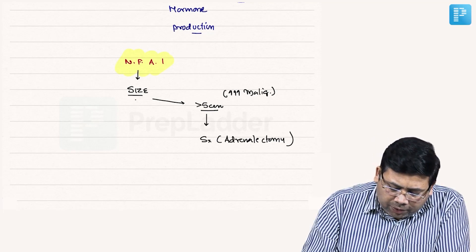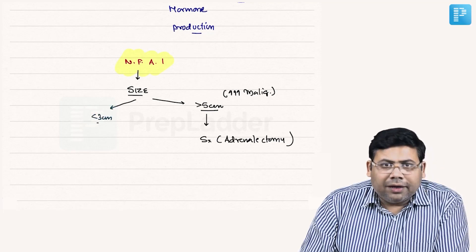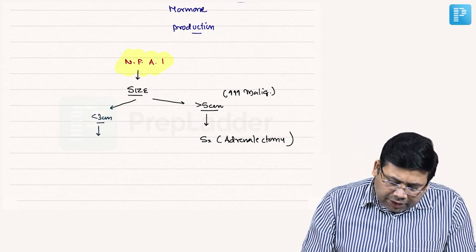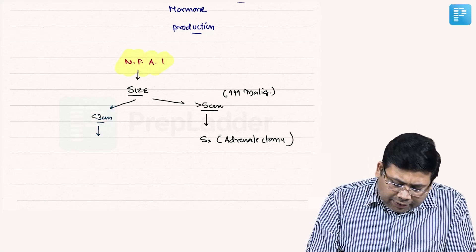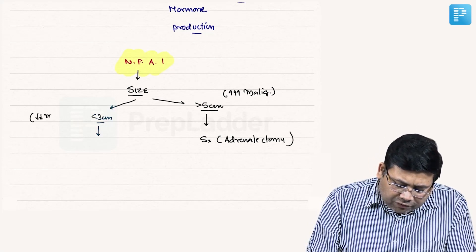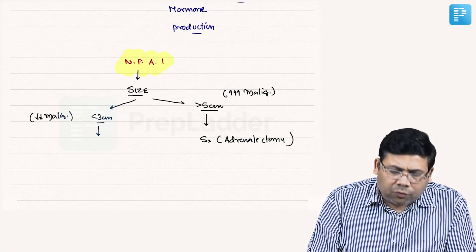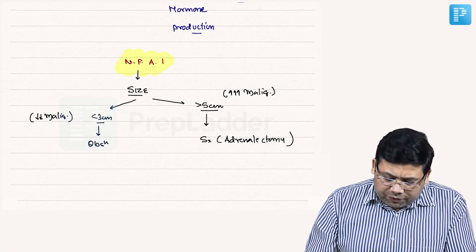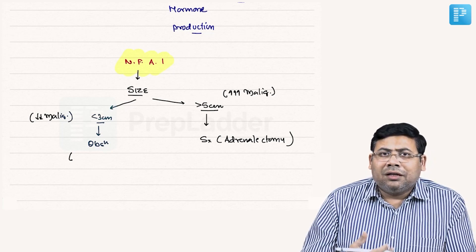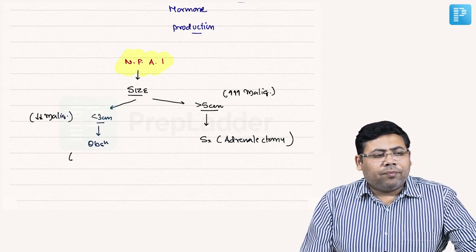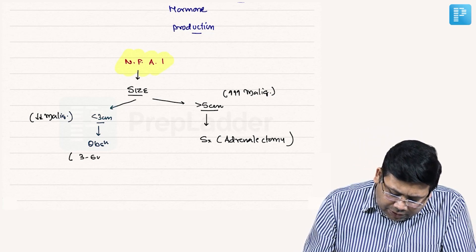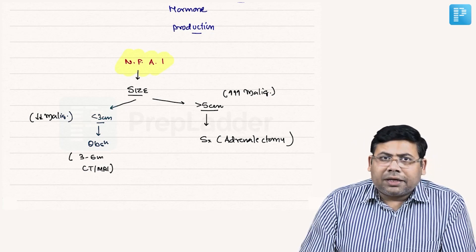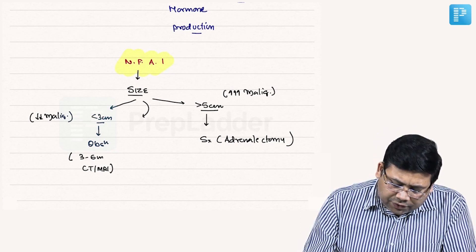Adrenal incidentaloma less than three centimeters is generally considered to be benign. There is no increased risk of malignancy, so why go for surgery? Observation is the call. The strategy for observation is three to six monthly CT or MRI.